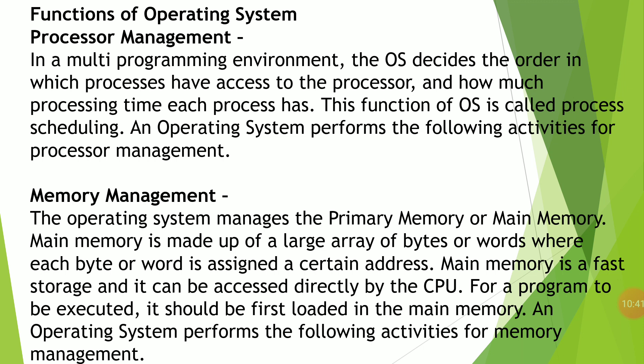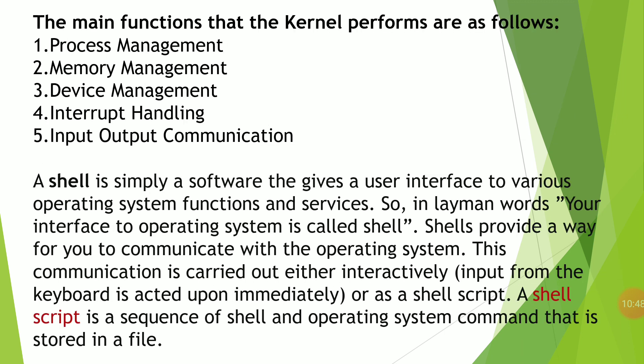Next, why do we need an operating system? Without an operating system, we are not able to give instructions to the hardware. Hardware needs instructions — what to do, when to do, and how to do it — and a user cannot give these instructions directly. That is why we need a set of programs, which is nothing but the operating system.